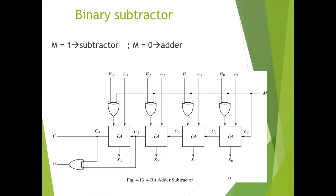We know that the process of subtraction can be done by taking the 2's complement of B and adding it to A. The 2's complement can be easily obtained by taking the 1's complement of B and adding 1 to the least significant pair of bits. We can implement 1's complement by using inverters, and the 1 can be added to the sum through the input carry. The circuit for A minus B consists of an adder with inverters placed between each data input B and the corresponding input of the full adder.